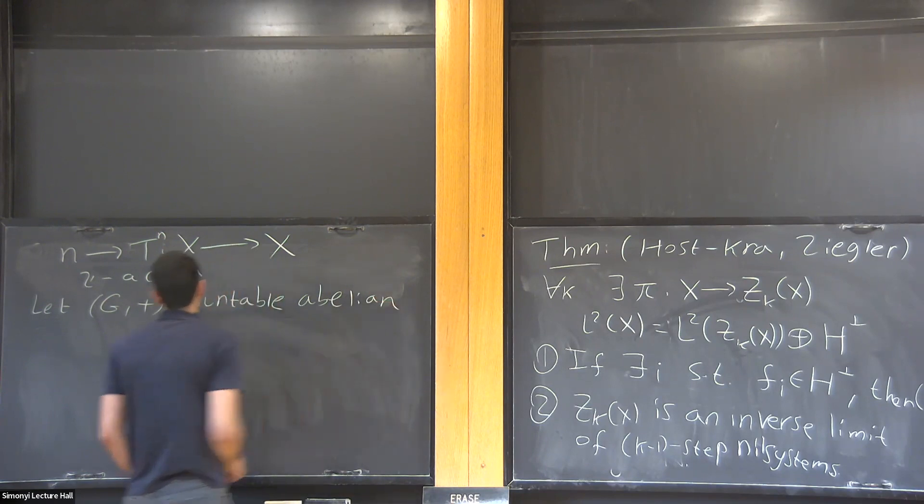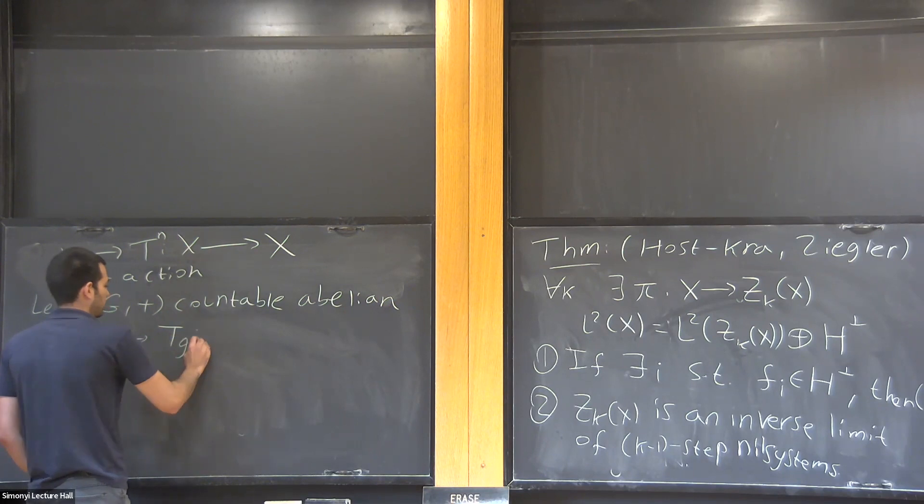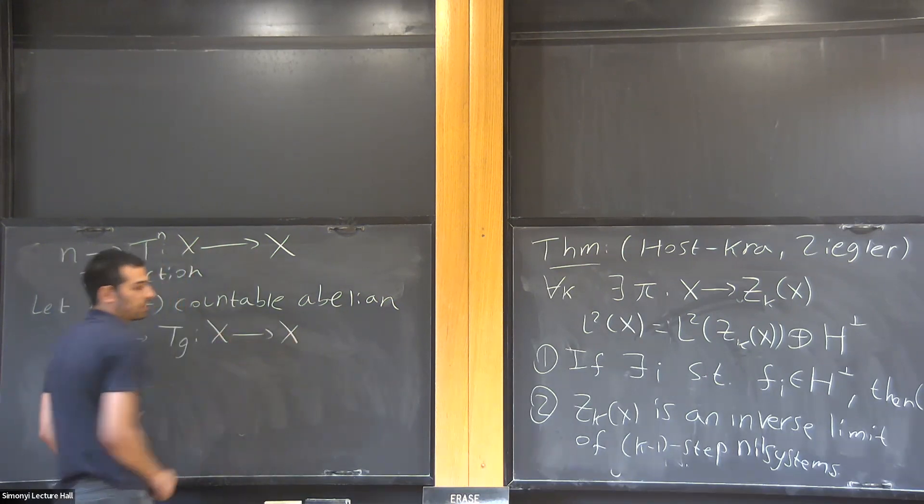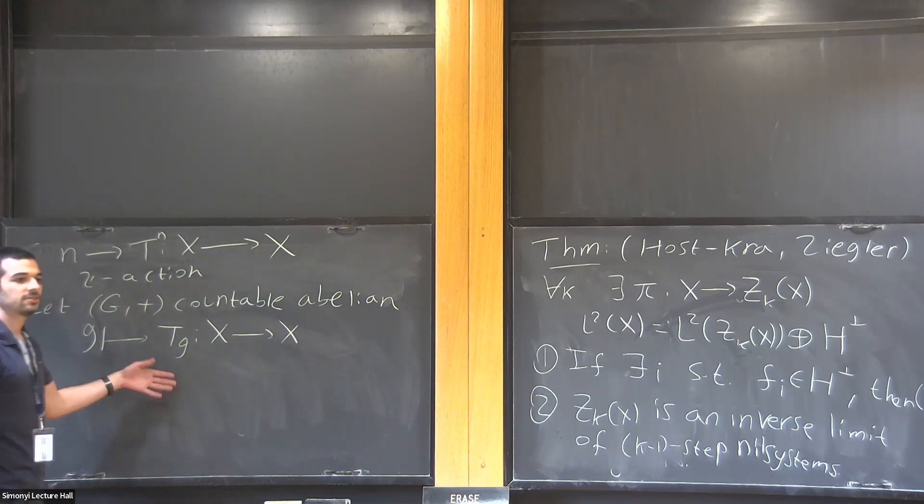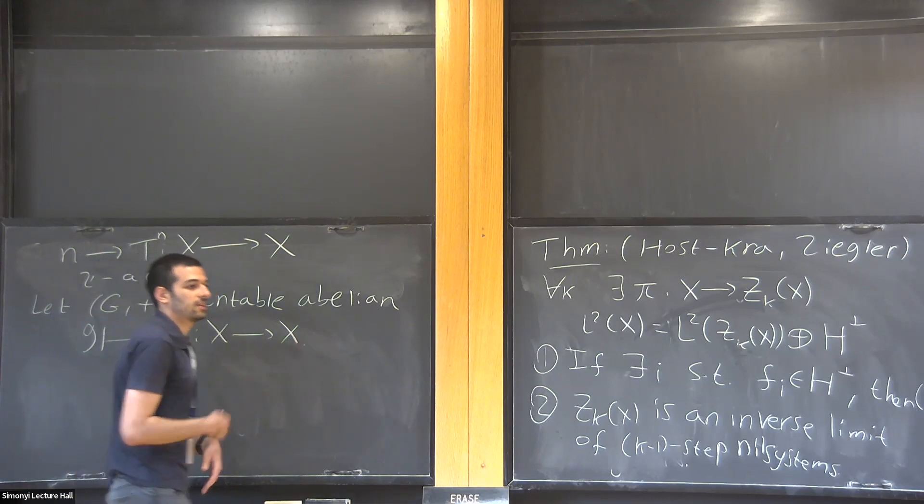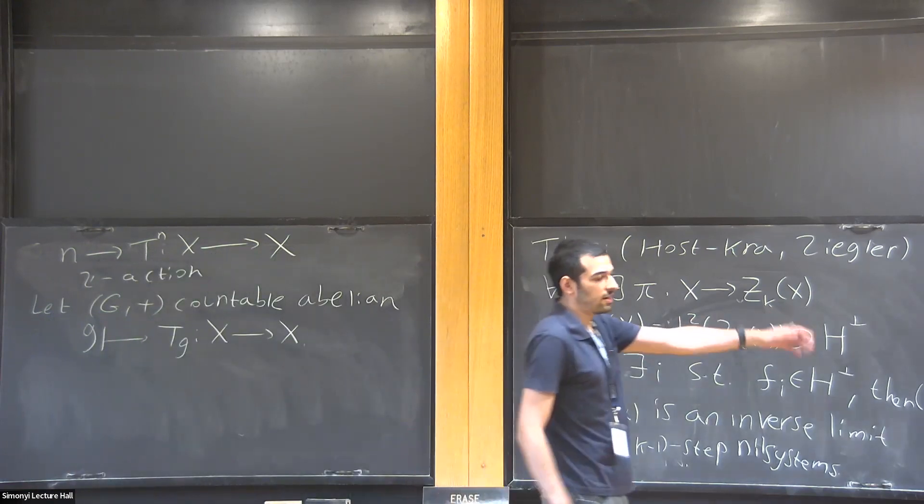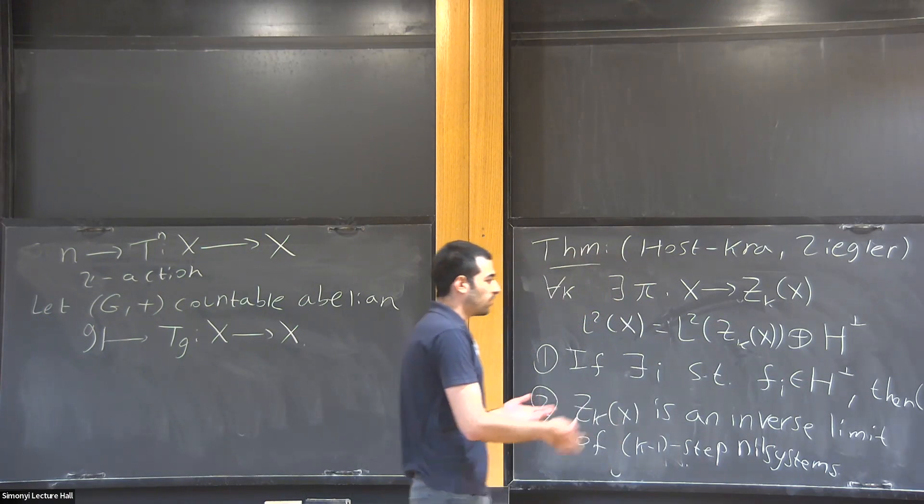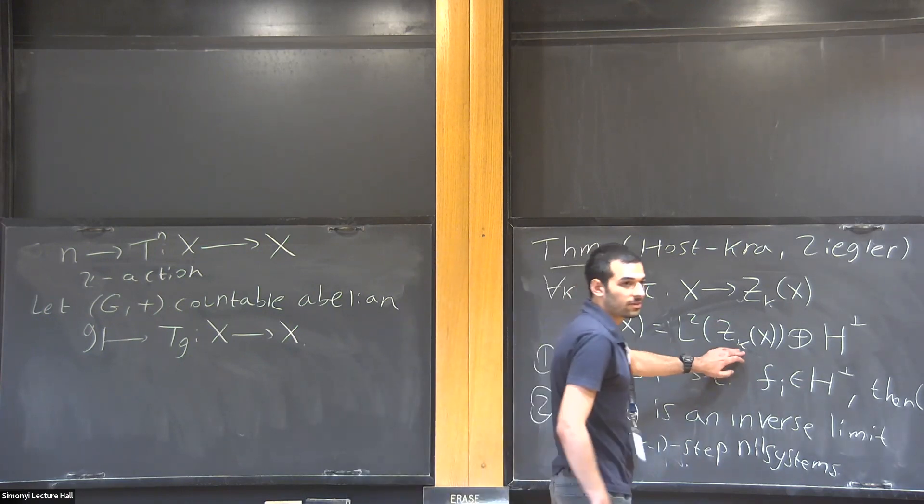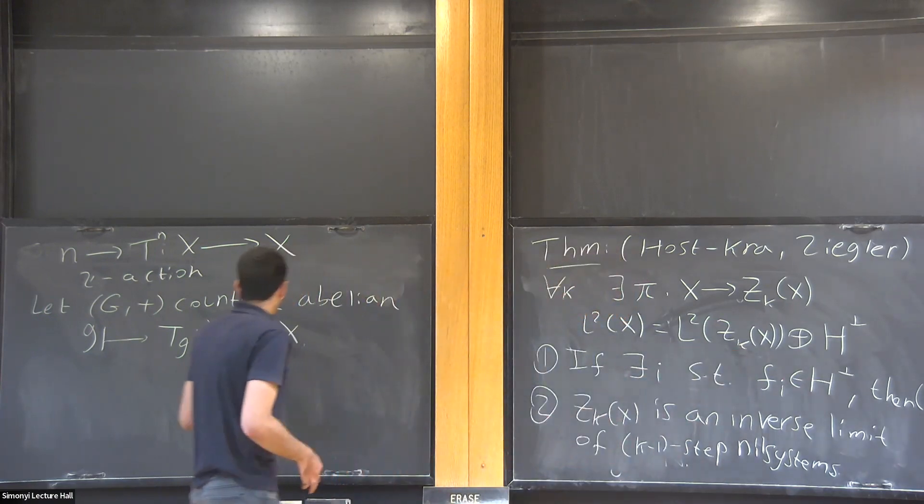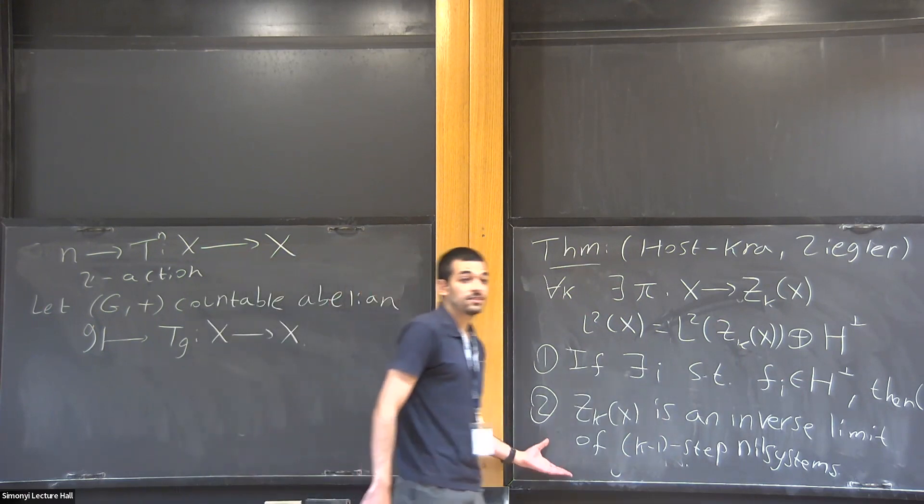So if you have a countable amenable group, you can study measure-preserving actions of G on some probability spaces. And as usual, this gives rise to unitary representations of G on the L2 space. And using Følner sequences, you can define new multiple ergodic averages and also other notions related to these factors. And you can ask whether they satisfy this structure theorem.